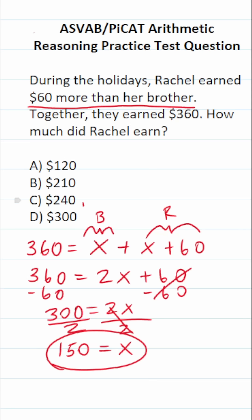X corresponds to how much her brother earned. So her brother earned $150. That said, right here, it says Rachel earned X plus $60. We know X is 150. So all we have to do is plug that in right here. This is 150 plus 60.